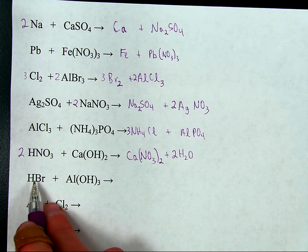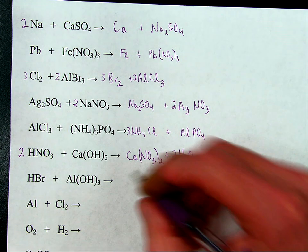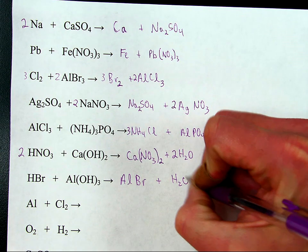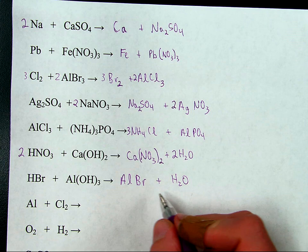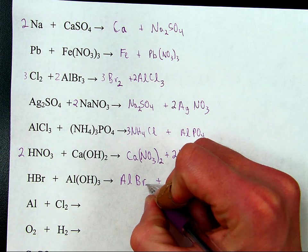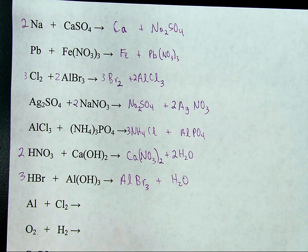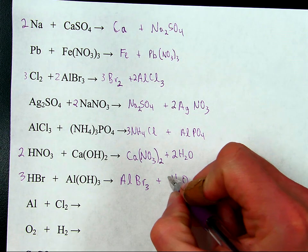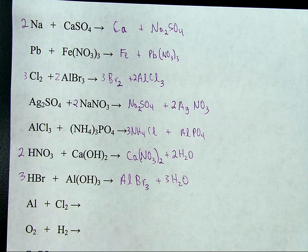Acid and a base — just a double displacement reaction. Put the aluminum here and hydrogen here. Hydrogen plus hydroxide is water. Aluminum plus Br is aluminum bromide. Fix the formula: aluminum is a plus three, bromine is a minus one — so the formula is AlBr3, meaning three bromines. Three oxygens means three waters, which requires six hydrogens — there are three plus three for a total of six. Done.